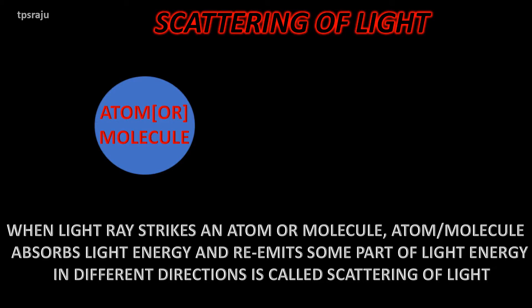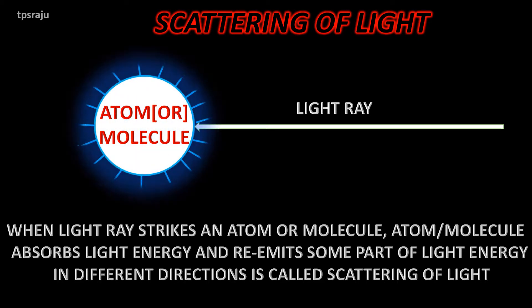Scattering of light. When light ray strikes an atom or molecule, the atom or molecule absorbs light energy and re-emits some part of light energy in different directions. It is called scattering of light.